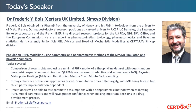Today's topics will be to compare the results obtained with a minimal PBPK model for theophylline, using a dataset of 18 subjects with microstration data. We will use the quasi-random parametric expectation maximization algorithm (QRPEM), the non-parametric adaptive grid estimation method (NPAG), and two Bayesian algorithms: the Bayesian Metropolis-Hastings algorithm and Hamiltonian Monte Carlo sampling. I will briefly describe the gist of each method. What we will show is strong coherence between the four approaches tested.